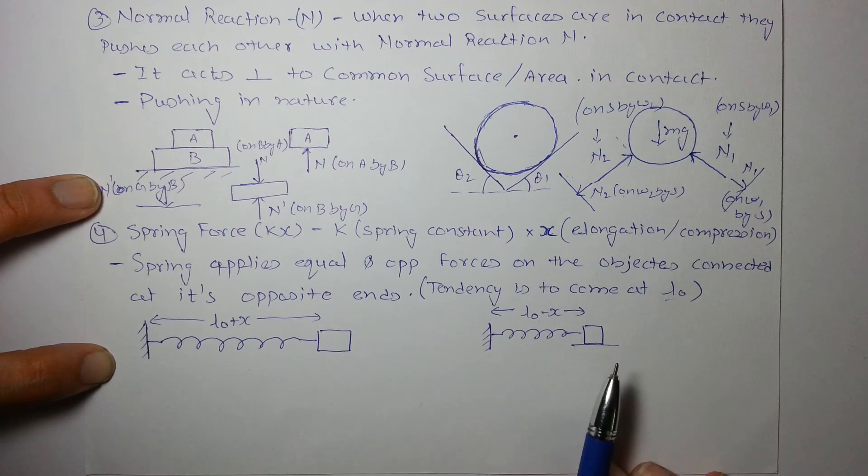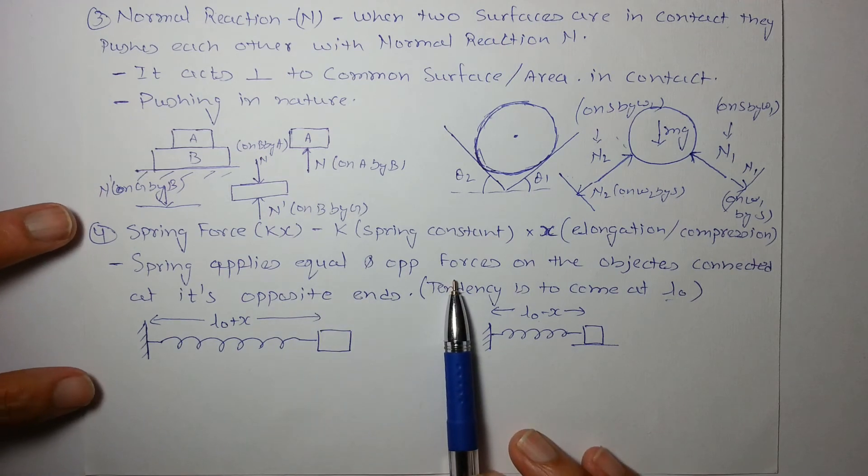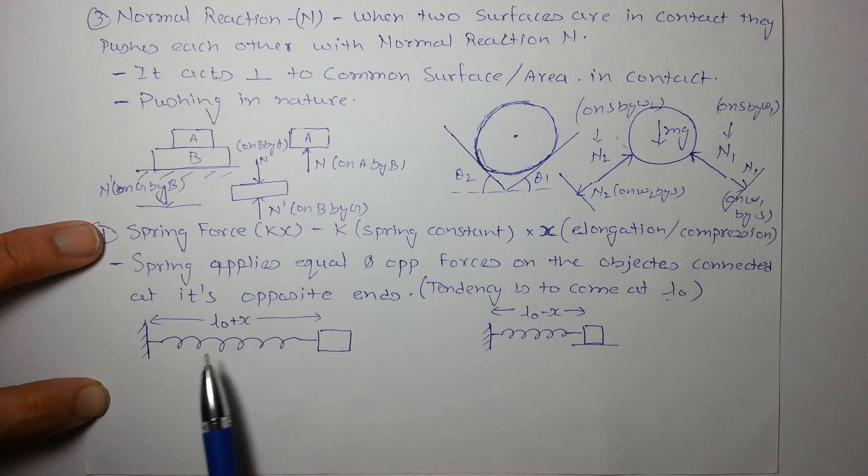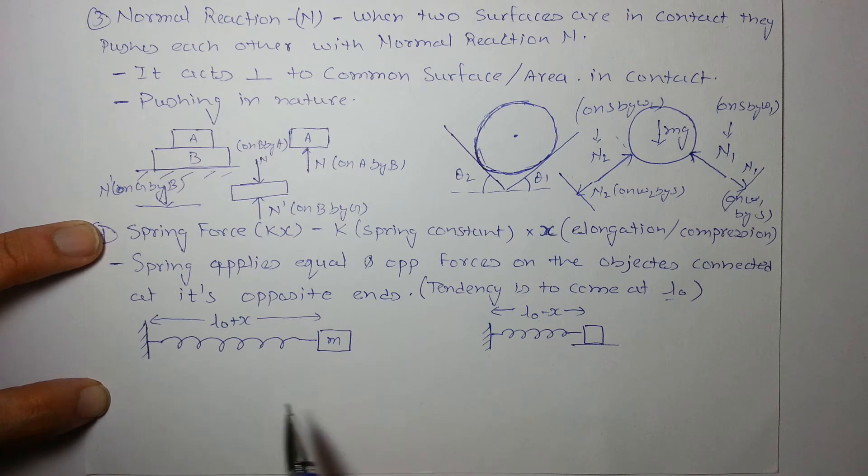The spring applies equal and opposite forces on the objects connected at its opposite ends. So the objects are wall and block, so it will apply equal and opposite force on both.